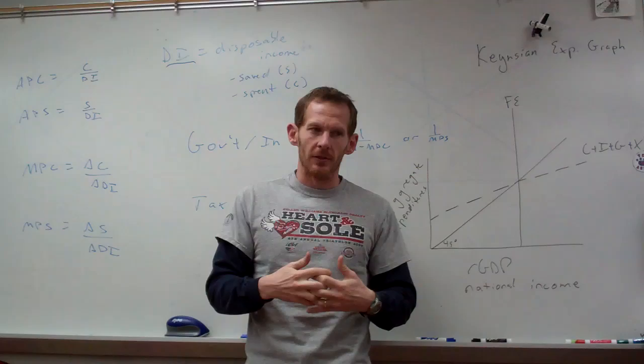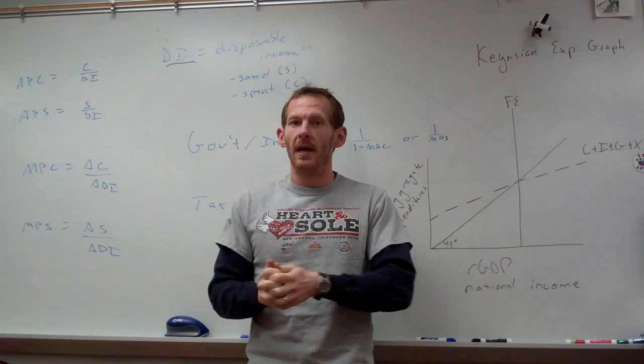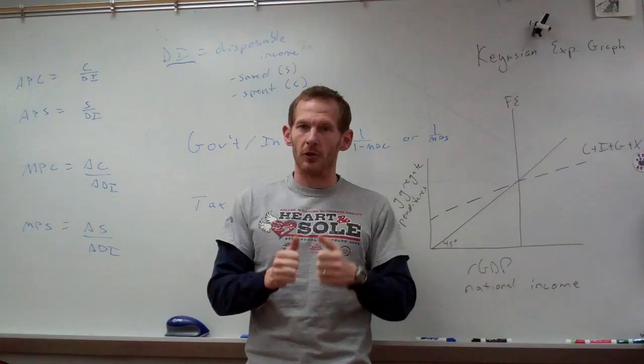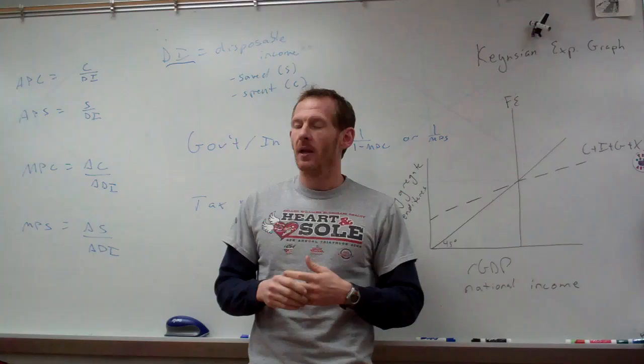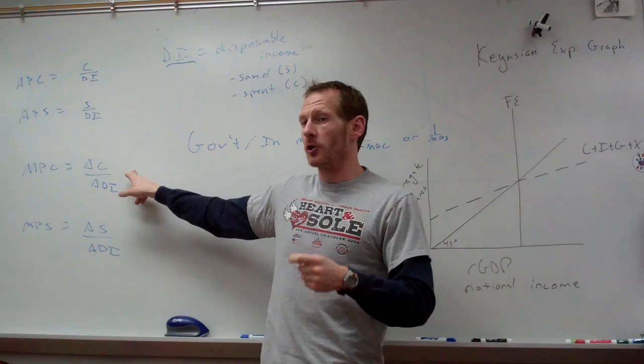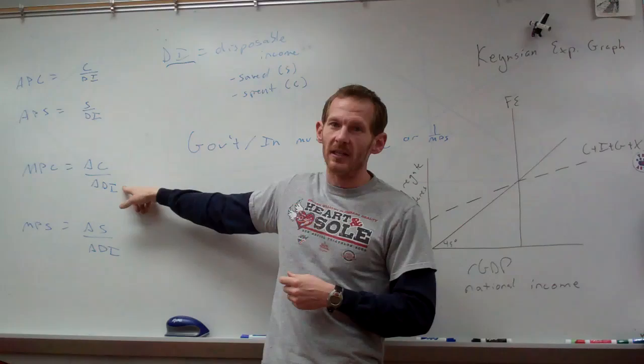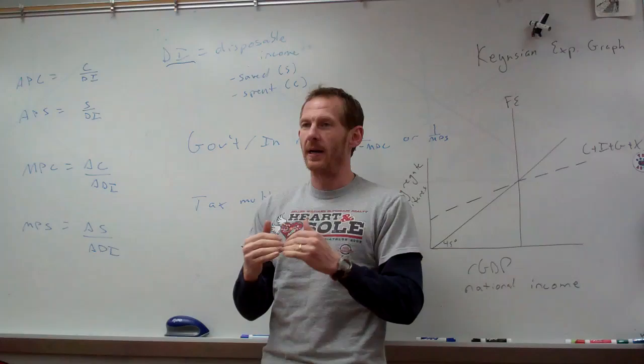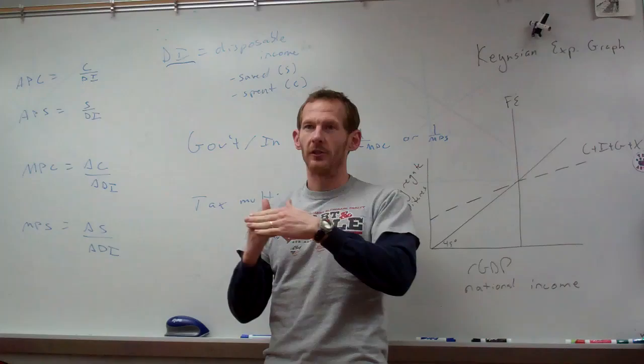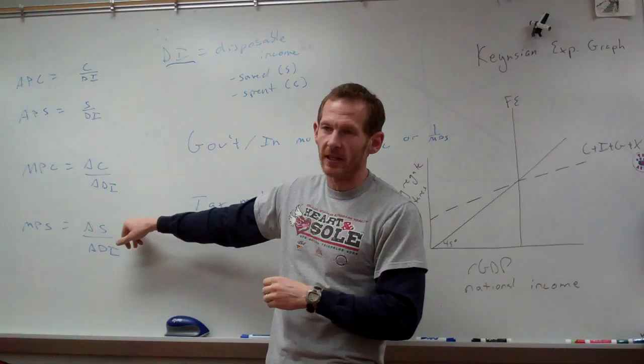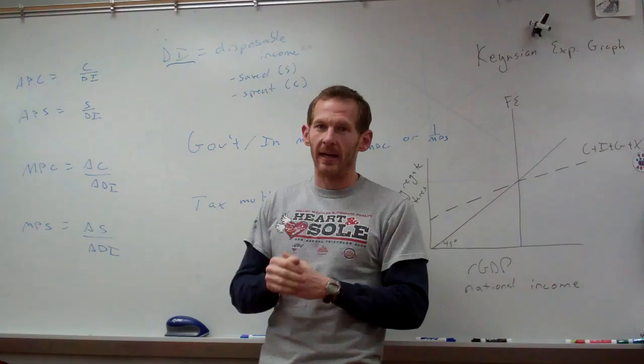There's an even more important factor: the marginal propensity to consume and the marginal propensity to save. Marginal means additional — with every additional dollar we get, how much do we consume and how much do we save? The formula for MPC is the change in consumption over the change in DI. When we get an extra dollar, how much of that new dollar do we consume versus how much more income we're bringing in? Similarly, MPS is the change in savings over the change in DI.